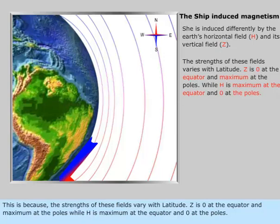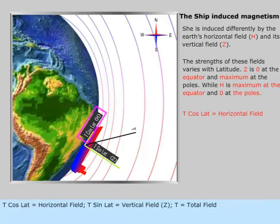T cosine latitude equals horizontal field. T sine latitude equals vertical field, Z. T equals total field.